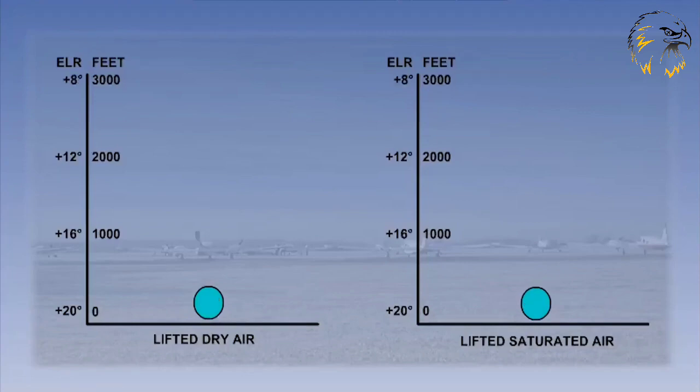Air is unstable if, after an initial movement upwards, it continues to rise. In other words, it is buoyant. This happens when the parcel of air finds itself surrounded by cooler air.